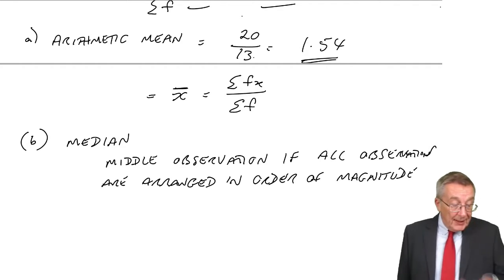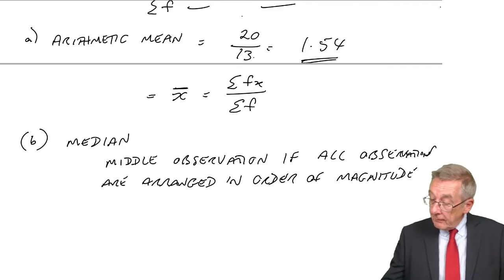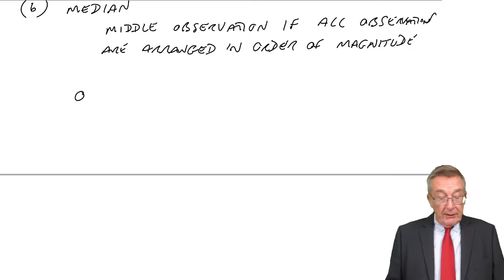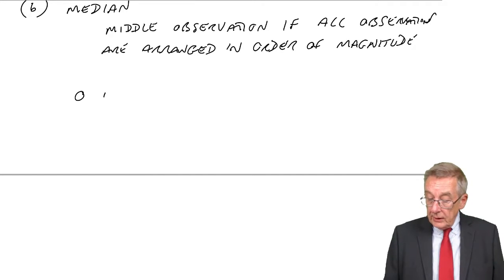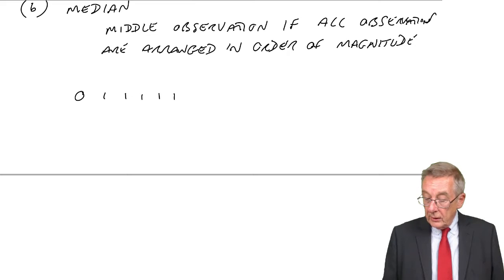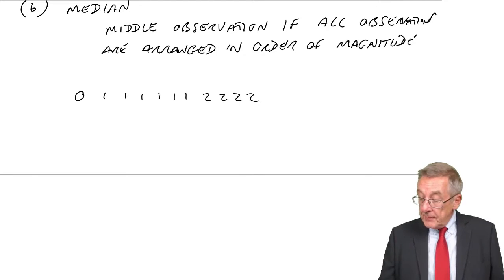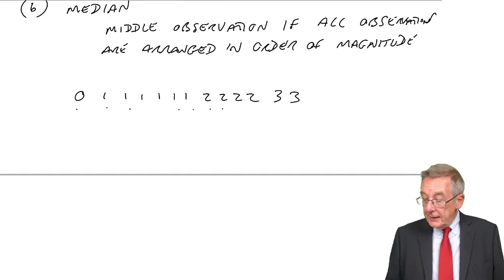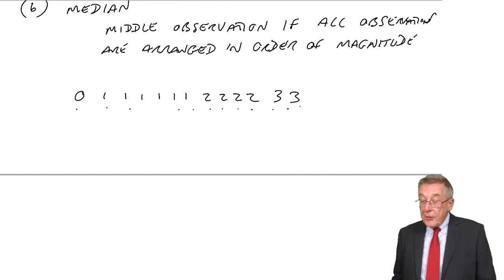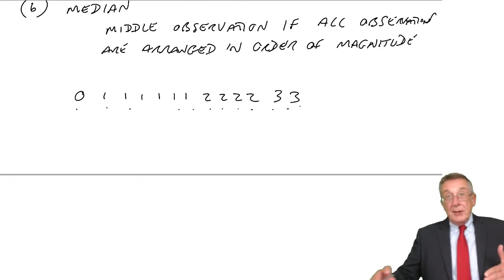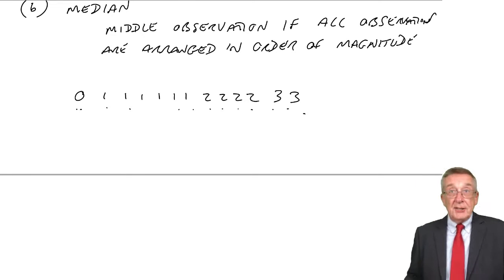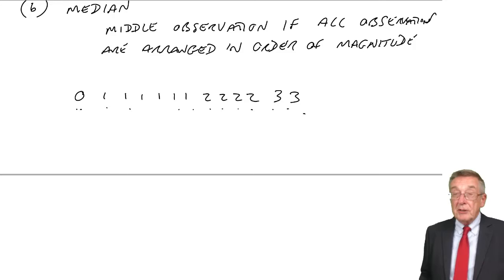Now, what that means is: here we have 13 observations. And if I wrote them all down — once it was 0, and then 6 times it was 1, then 4 times it was 2, and then 2 times it was 3. So there are my 13 observations, listed in order of size. It doesn't matter whether you put smallest first and biggest last, or biggest first and smallest last — but they're there in order of size.